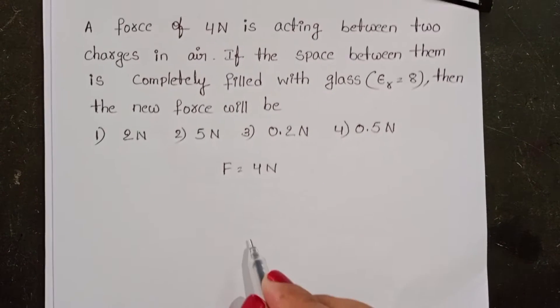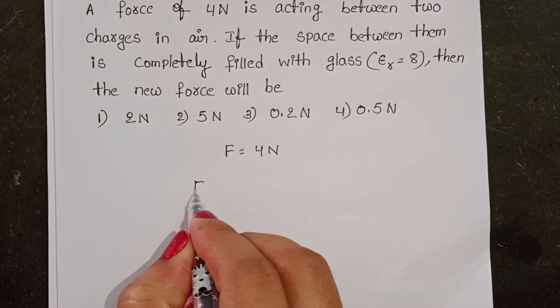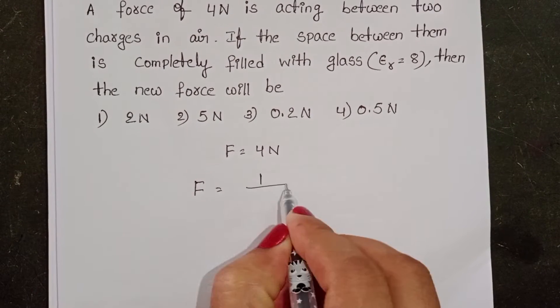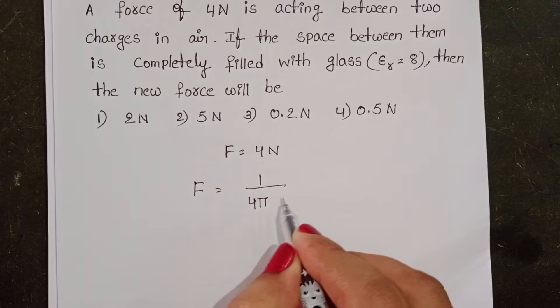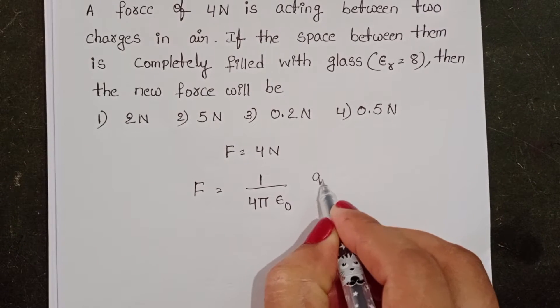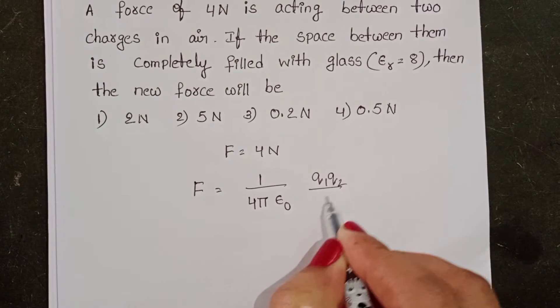We know Coulomb's law: the force of attraction or repulsion between two charges when placed in air is 1 by 4 pi epsilon 0, q1, q2 by r square.